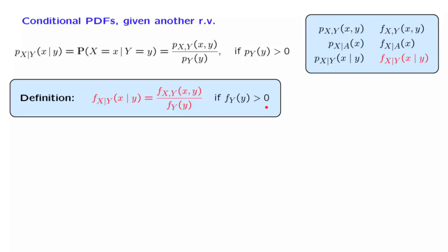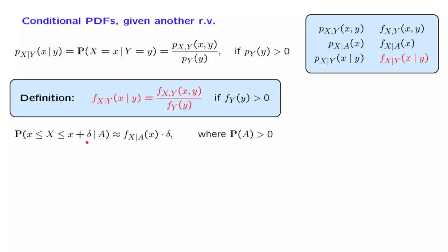Let us now try to make sense of this definition. Recall the interpretation of the conditional PDF given an event A that has positive probability. We know that the PDF is used to determine the probability of a small interval, and similarly the conditional PDF is used to calculate the conditional probability of a small interval given the conditioning event. We would like to do something similar, taking the event A to be the event that Y equals some particular value little y.